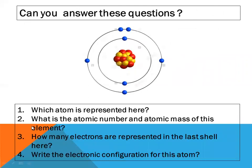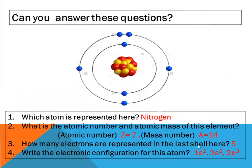What is the atomic number and atomic mass of this element? Atomic number is 7, since the number of electrons equals the number of protons. For the mass number, we count what is present inside the nucleus: 1 through 14, giving mass number 14. How many electrons are in the last shell? Counting the outermost shell: 1, 2, 3, 4, 5 — five electrons. So the electronic configuration is 1s2 2s2 2p3. In summary: atom is nitrogen, atomic number 7, mass number 14, valence electrons 5.